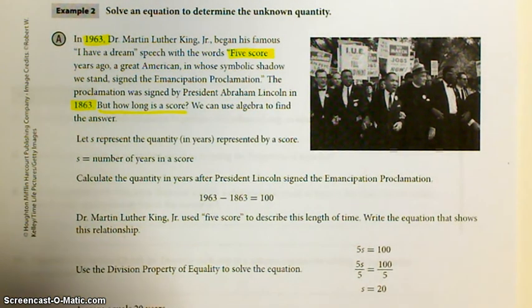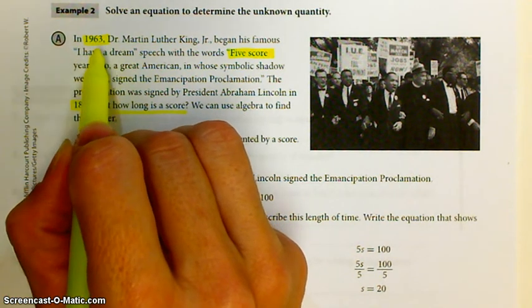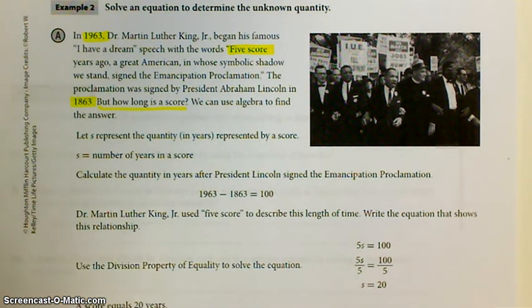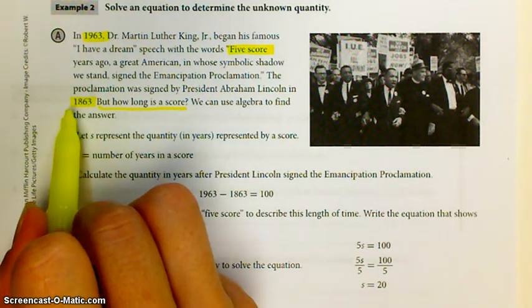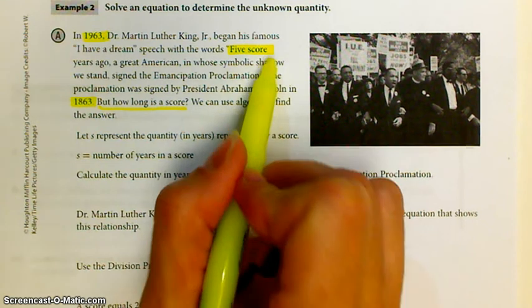In 1963, Dr. Martin Luther King Jr. began his famous I Have a Dream speech with the words, five score years ago, a great American in whose symbolic shadow we stand signed the Emancipation Proclamation. The proclamation was signed by President Abraham Lincoln in 1863. Dr. Martin Luther King Jr. was making his speech in 1963. The Emancipation Proclamation was signed in 1863. But how long is a score? He said five score years ago.